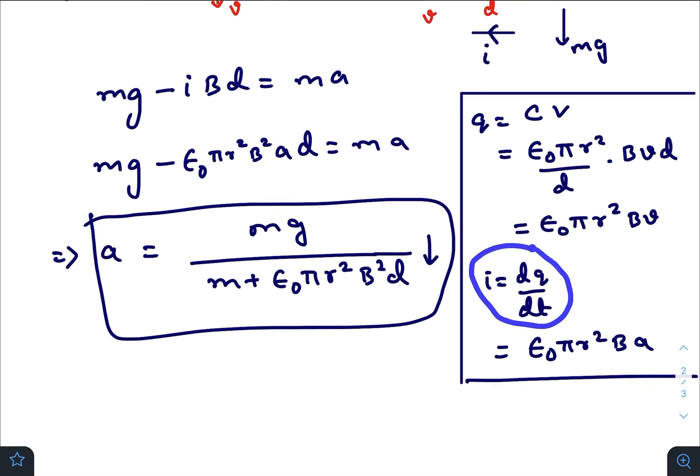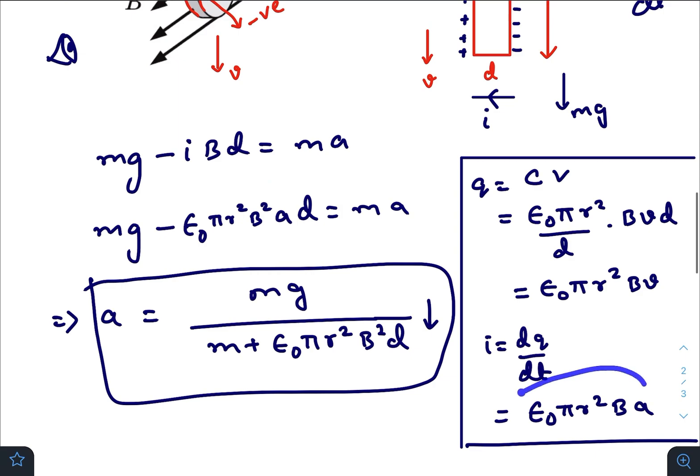Rate of increase of charge on the left plate or left surface would give you epsilon naught pi r square B. D V D T is nothing but acceleration. So just put this value here.